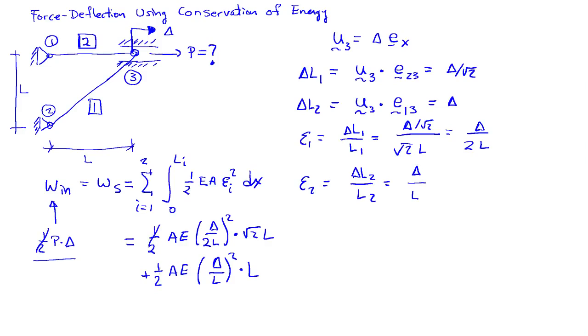I can cancel the one-halves, and I can cancel a delta, at least in each numerator. So we have P from the left-hand side, then each term has a factor of AE and a factor of delta. Then this is going to multiply, in the first term here, I have a 1 over 4L squared, square root of 2, times L. That's going to cancel. And then in the second term, I have a plus 1 over L squared times L.